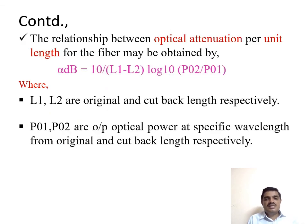This is our relationship between optical attenuation and per unit length, represented by the equation: alpha equals 10 divided by L1 minus L2, multiplied by log to the base 10 of P02 divided by P01. L1 and L2 are the original and cut-back lengths respectively. P01 and P02 are output optical powers at the specific wavelength.